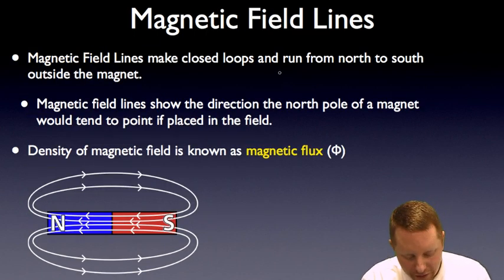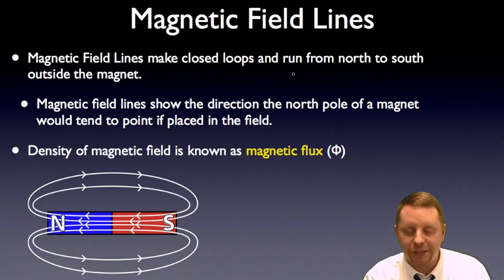Now magnetic field lines make closed loops and run from north to south outside the magnet, and they run from south to north inside the magnet as they make a closed loop. They show the direction the north pole of a magnet would tend to point if it was placed in the magnetic field. So compasses, or other magnets, line up with the net magnetic field. The density of the magnetic field is known as the magnetic flux, phi.